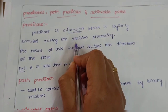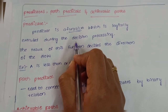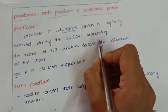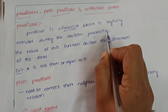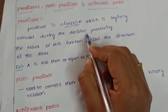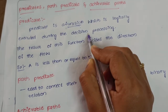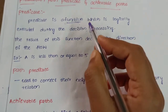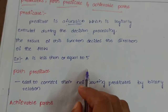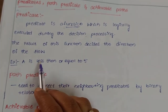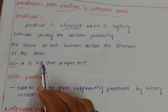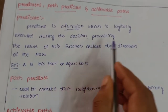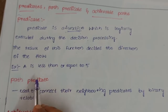In the previous video we discussed decisions, junctions, and normal statements. A decision is executed during processing and could have two choices — one choice will be true and another choice will be false. The result of this function decides the direction of the flow, whatever function we have performed during the processing of any program.